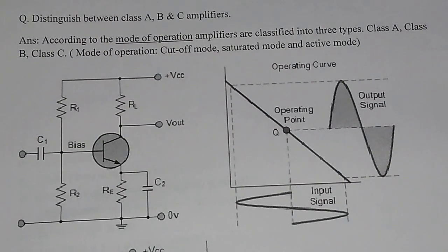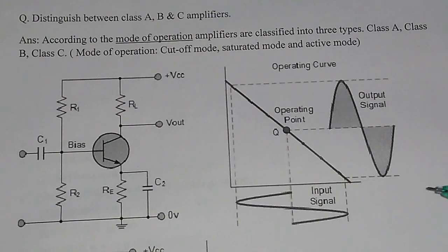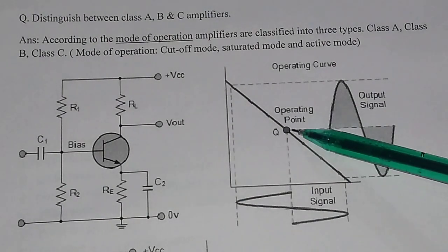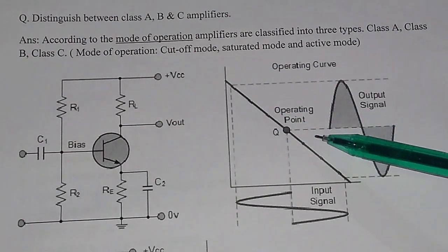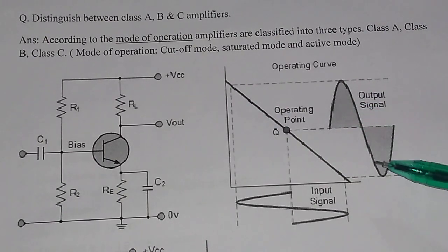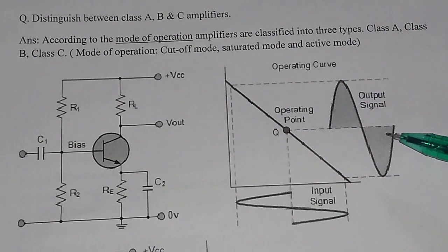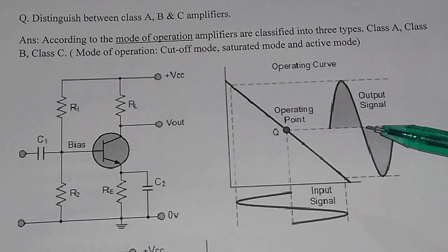The conduction angle in class A is equal to 360 degrees. Since the Q point lies at the middle of the load line, you have some DC in the output. Because of this DC component in the output, the efficiency in class A operation is less.